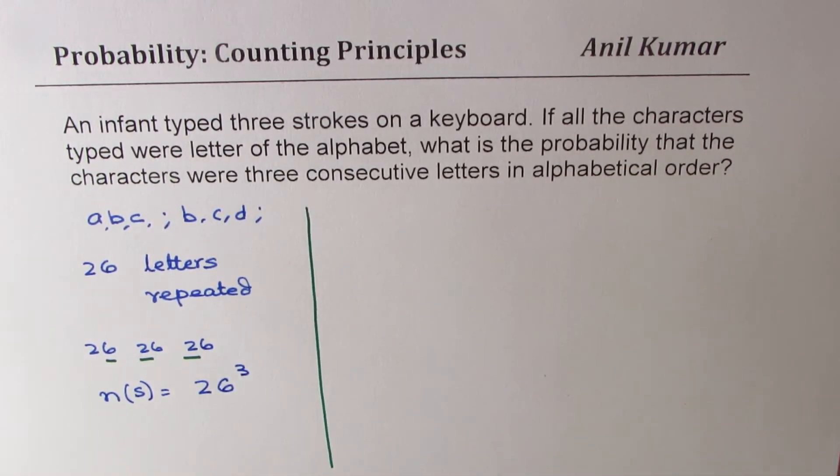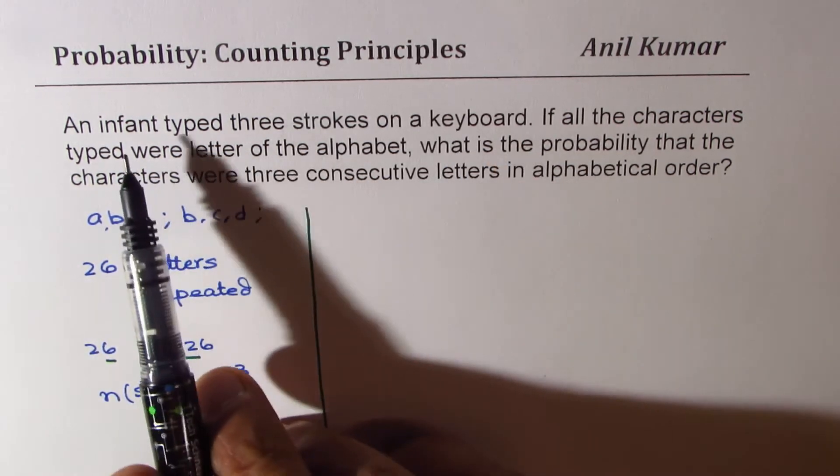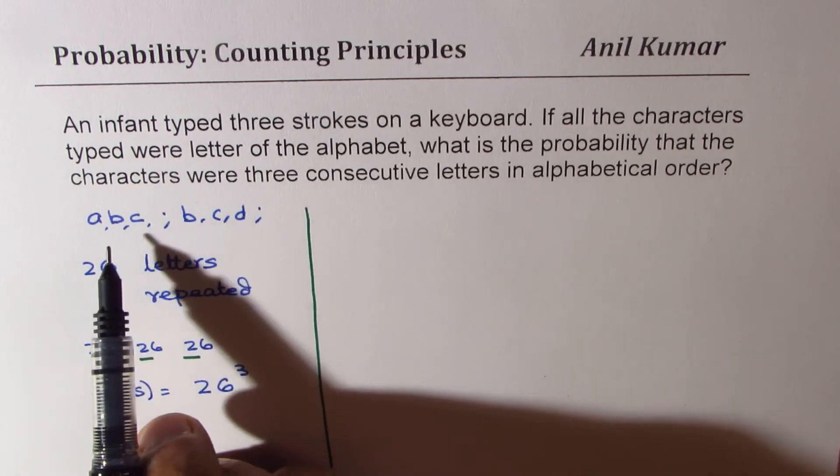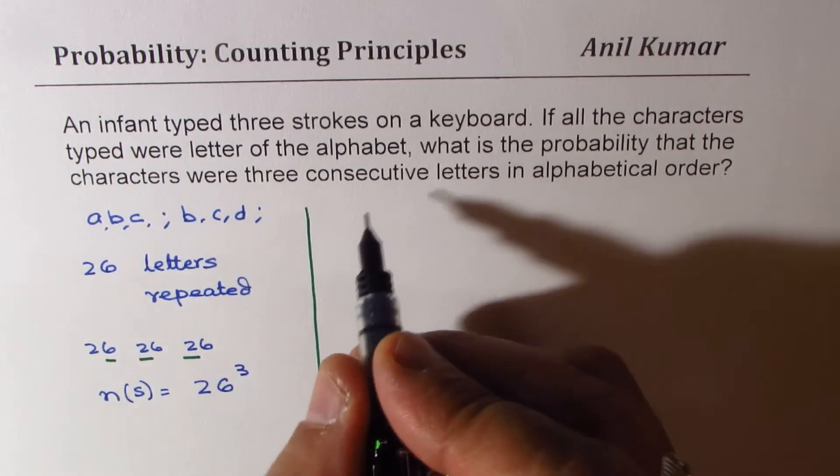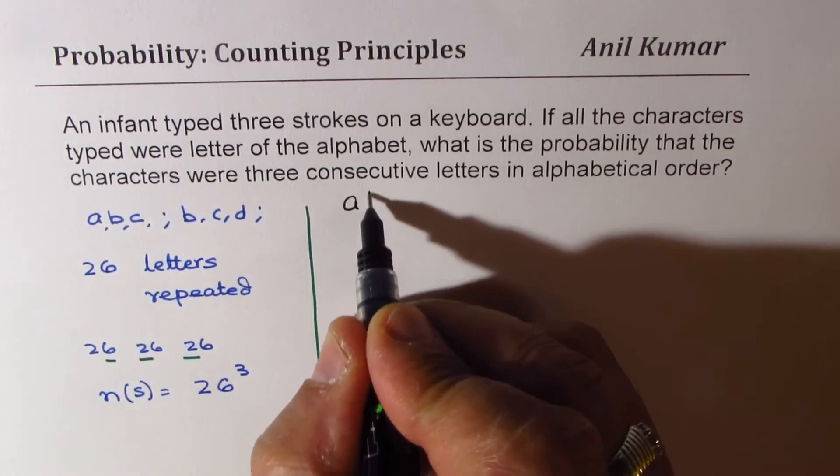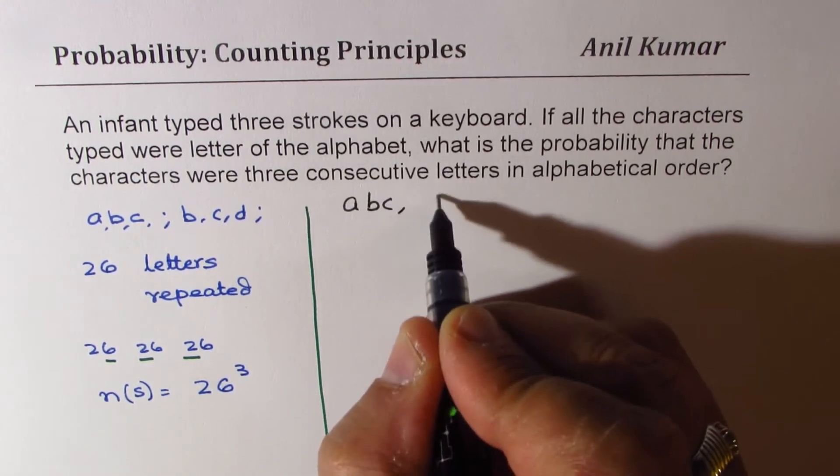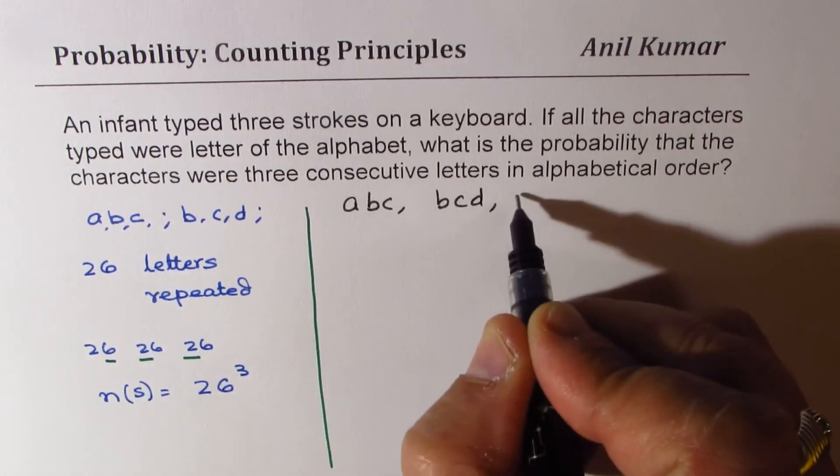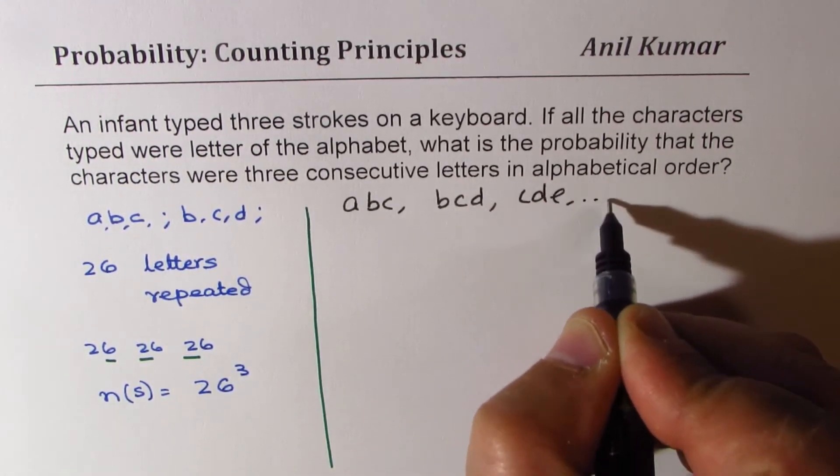Now let's talk about the probability of getting them in order. It's a random event since an infant is typing. If you arrange them in order, for example, A, B, C, and then we have B, C, D, and then C, D, E, and so on,